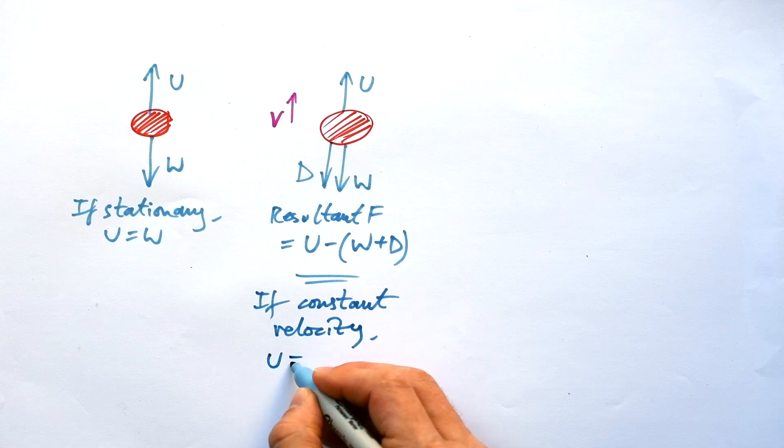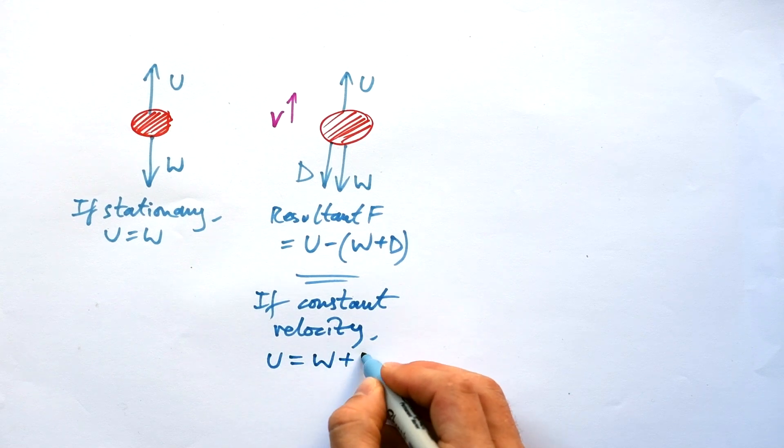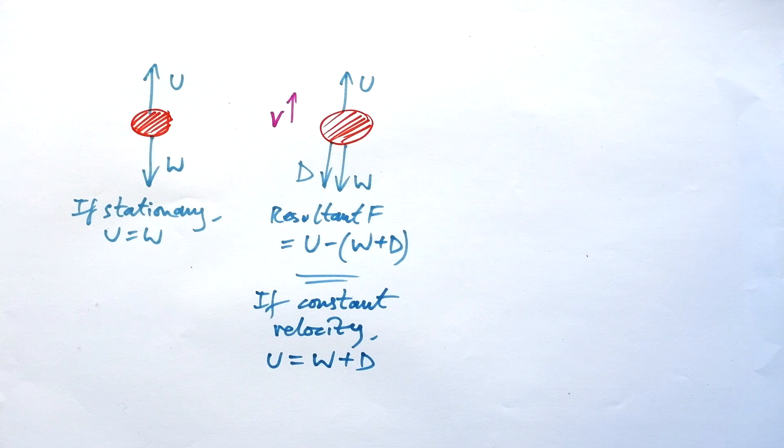But if it's rising at a constant velocity, at a constant speed, we know that these forces are equal. So the upthrust is going to be equal to the weight plus the drag. No overall force, even though it's moving upwards.